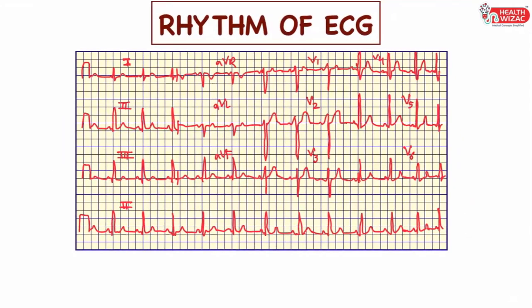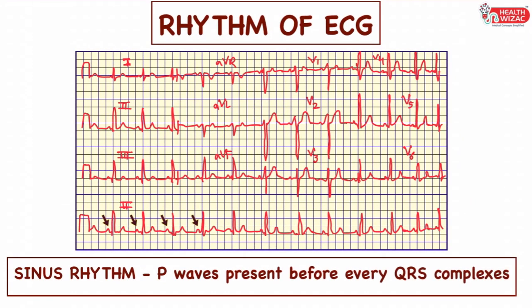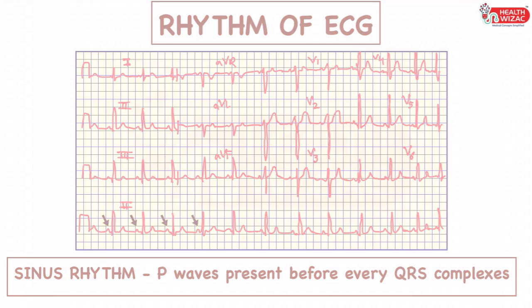Rhythm of the ECG is called sinus if P waves are present before every QRS complex.